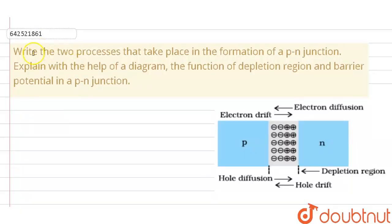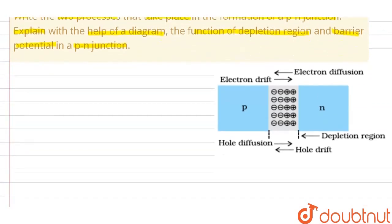Hello everyone, let's start with a question. The question says, write the two processes that take place in the formation of a p-n junction. Explain with the help of a diagram the function of depletion region and barrier potential in a p-n junction. So, the two processes that take place in the formation of a p-n junction are diffusion and drift.